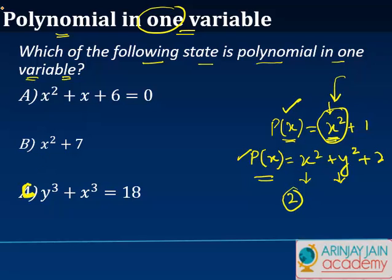So let's look at the first one. In the first one, we have x squared plus x plus 6. 6 is a fixed value and the only other variable that we have here is x. Since there is only one variable, we say that this polynomial is in the state of one variable. So this is a yes.